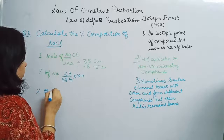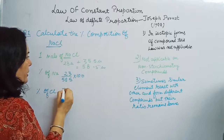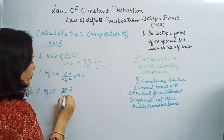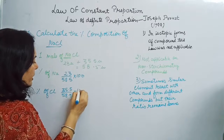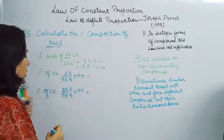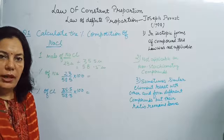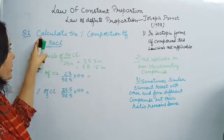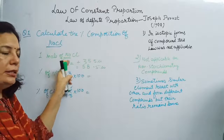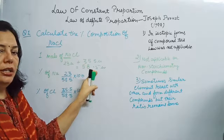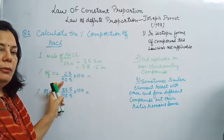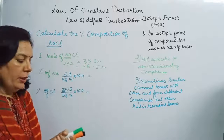Percentage of sodium = (23 / 58.5) × 100. Percentage of chlorine = (35.5 / 58.5) × 100. You can now calculate the percentage of sodium and chlorine in sodium chloride.